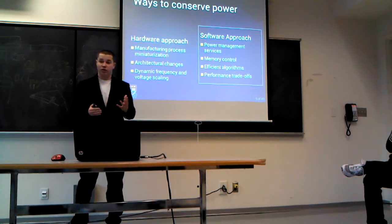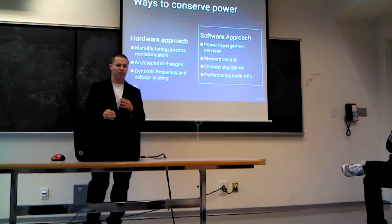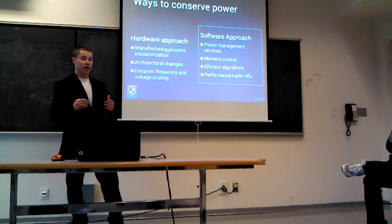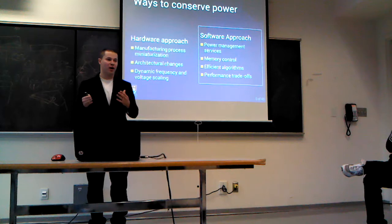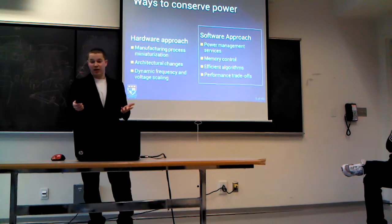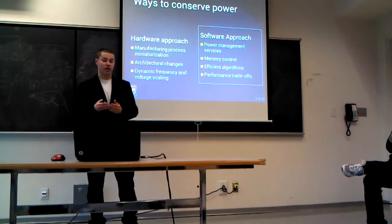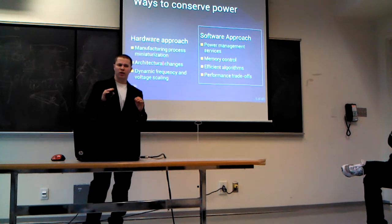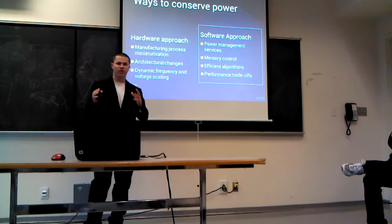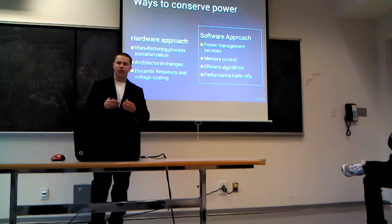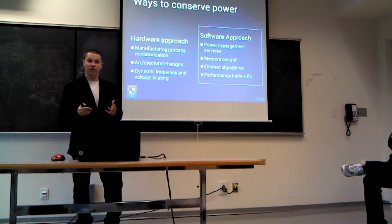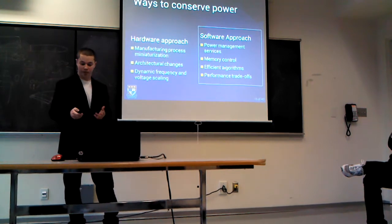What does the software approach mean? First, most smartphone operating systems have power management services — for example, they turn off your screen when there is no user activity. But the main power consumption comes from applications. The techniques to save power are: first, implement efficient algorithms; and second, introduce performance tradeoffs — where you give up some minor features to improve battery life. For example, perform less calculations and provide less refined results, but save precious energy.